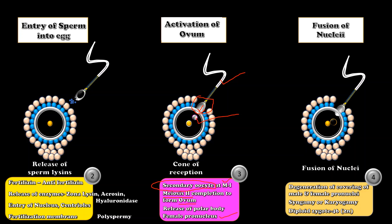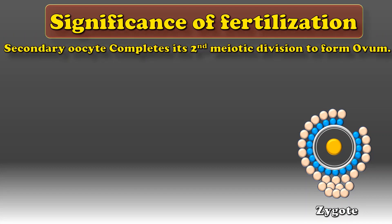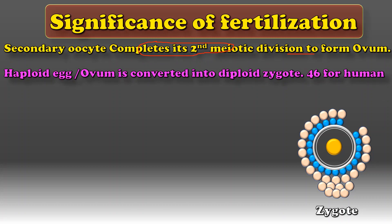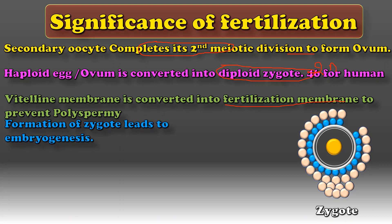There are many advantages of fertilization. First, entry of sperm into the female gamete causes it to complete its second meiotic division to form the ovum. Second, it converts the haploid ovum into a diploid zygote, thereby maintaining the diploid state of the organism — 46 chromosomes in human beings. Third, the vitelline membrane is converted into a fertilization membrane, preventing subsequent entry of sperm. Fourth, fertilization stimulates embryogenesis — the further development of the zygote to form an embryo and individual.